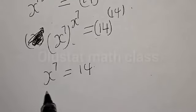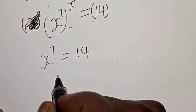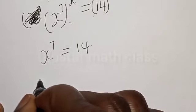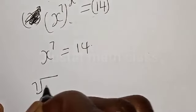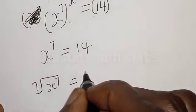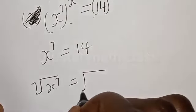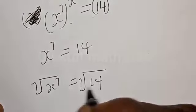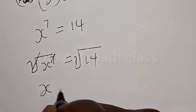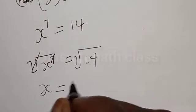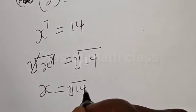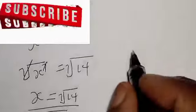From here we are going to solve in two ways. Method one: take the seventh root of both sides. Seventh root of s to the power 7 is equal to the seventh root of 14. The seventh root and the power of 7 cancel each other. Therefore, s is equal to the seventh root of 14. That is the answer.